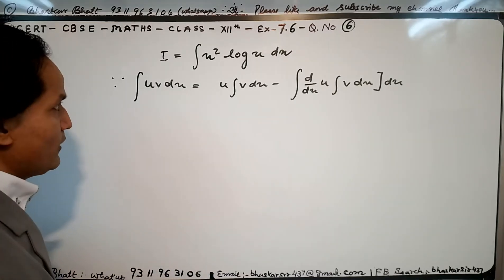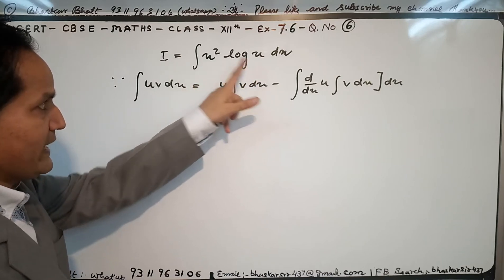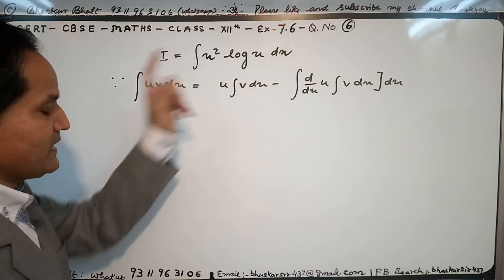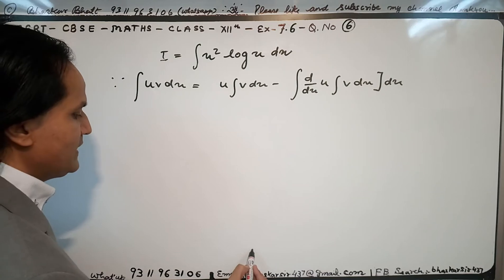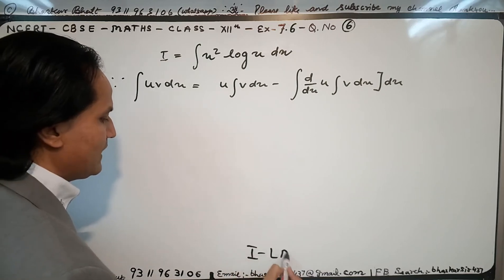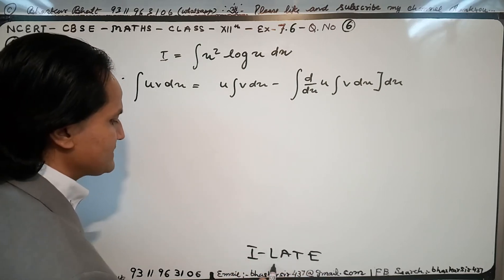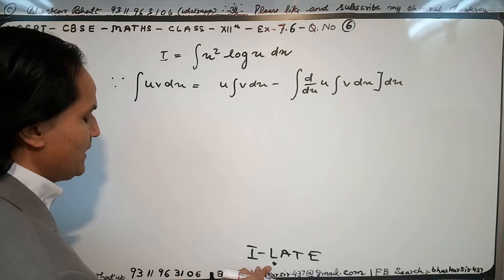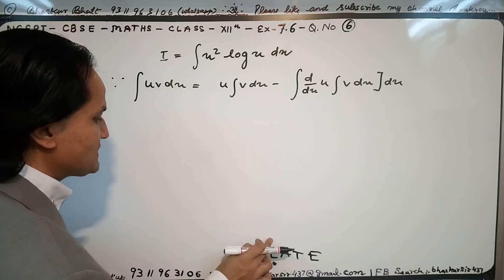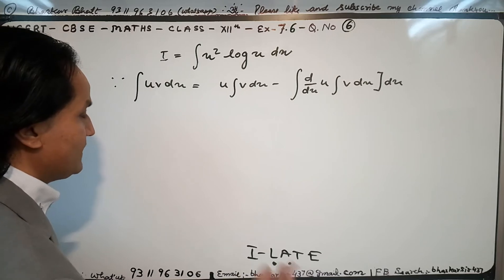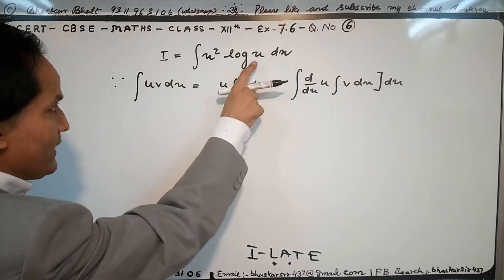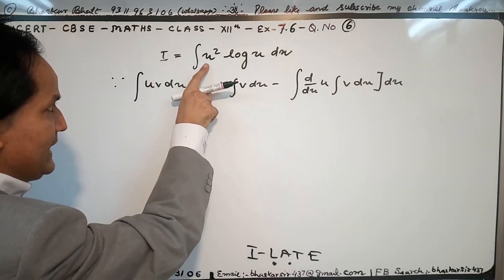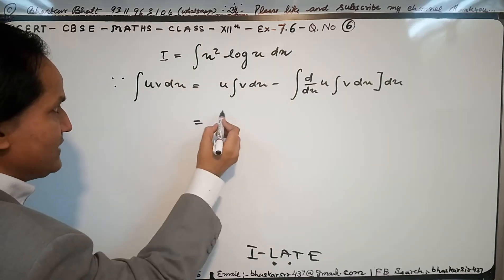One more time, we have two functions: x square and log x. Which will become the first function and which will become the second function? It is very clear from the technique ILATE. ILATE tells us that the logarithm function always becomes treated as a first function and algebraic function always treats as a second function. So log x is the first function here and x square treats as a second function.